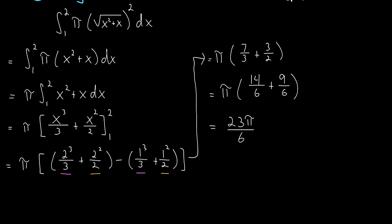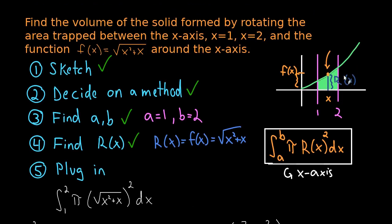So that is the answer. That is the volume that we were asked to find. It is the volume of the solid of revolution formed by rotating that trapped area around the x-axis. I hope this was helpful. In the next video we'll do a more advanced example and we'll keep going from there.